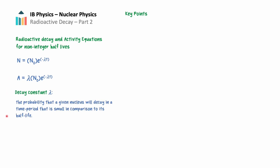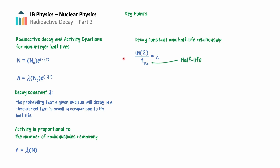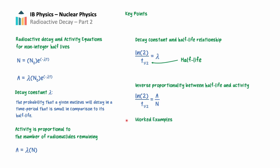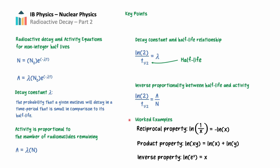That's all for Radioactive Decay Part 2, where we explored the equations for radioactive decay and activity for non-integer half-lives, taking a deeper look into the decay constant lambda. We combined those equations to show that activity and number of radionuclides remaining are proportional, then derived the relationship between the decay constant and half-life, and saw mathematically how half-life and activity are inversely proportional. Finally, we solved the decay equation for time using natural logarithms and their properties. Thanks for watching.